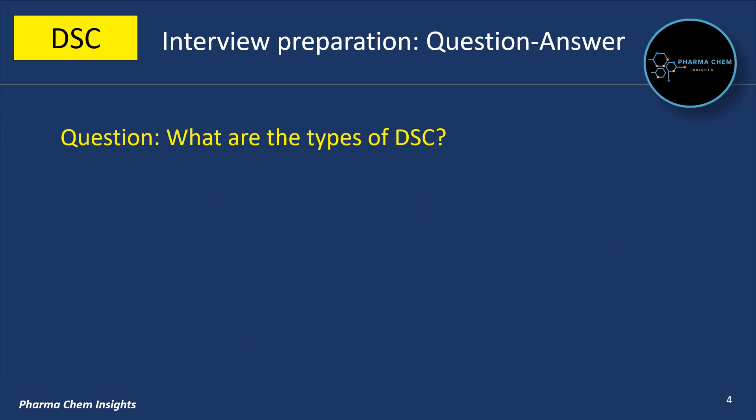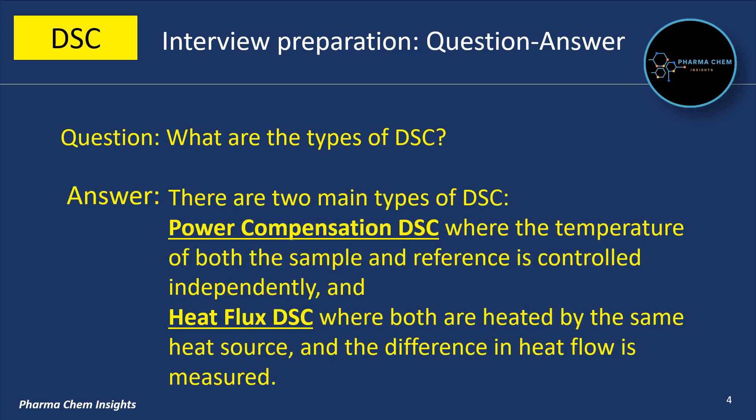Next question: What are the types of DSC? There are two main types of DSC. First is power compensation DSC, where the temperature of both the sample and reference is controlled independently, and heat flux DSC, where both are heated by the same heat source and the difference in heat flow is measured.